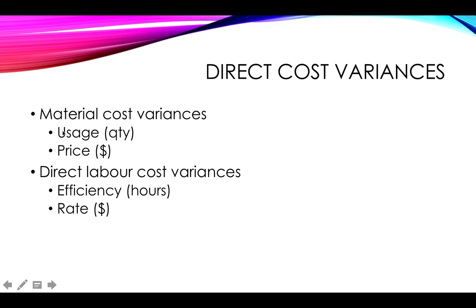For material cost usage we are looking at quantity — how much material was used. For direct labour, we look at how many hours were actually worked. Maybe the labour was more efficient and produced items in fewer hours, or maybe fewer hours were worked because workers went on strike. Your hours might be more or less than expected, and we call this the labour efficiency variance. Similarly, the wage rate or labour rate may be higher or lower than expected.